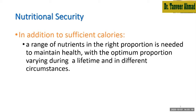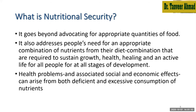Nutritional security means we always deal not only with calories, but with all the nutrients in a proper proportion — according to body requirement, they should be available to the individual. A range of nutrients in the right proportion is needed to benefit health optimally, and the proportion varies with different life stages. For example, the diet of a young child will be entirely different from an adult. The provision of the right amount of nutrients in the right proportion according to body need fulfills nutritional security requirements. It goes beyond advocating for appropriate quantity — we must also consider quality.